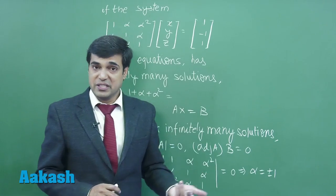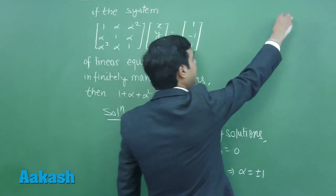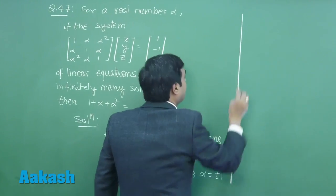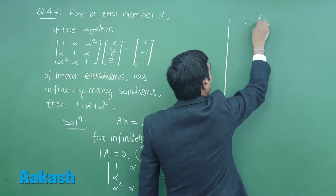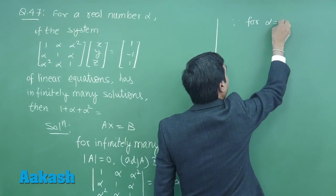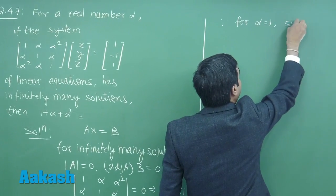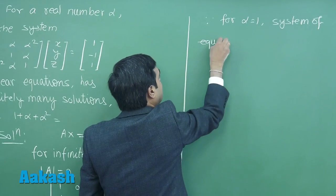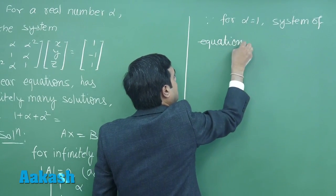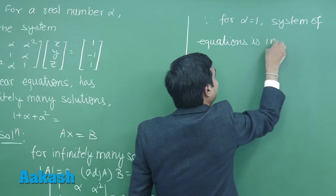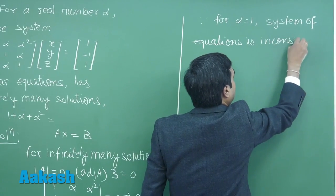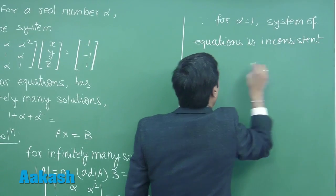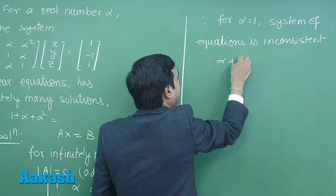If it's inconsistent, then there will not be solutions. Since for alpha = 1 the system of equations is inconsistent, therefore alpha cannot be 1.